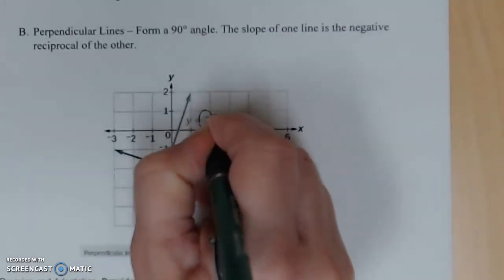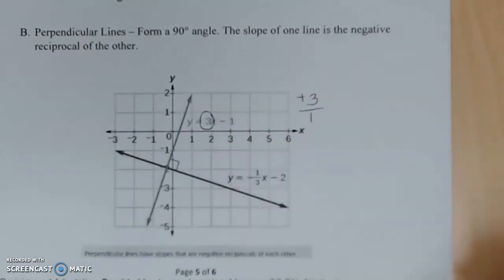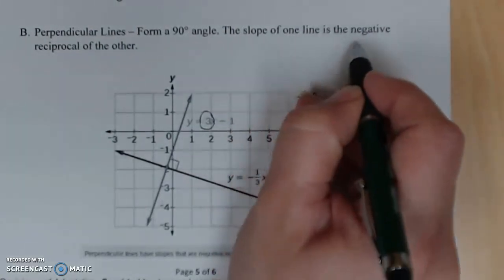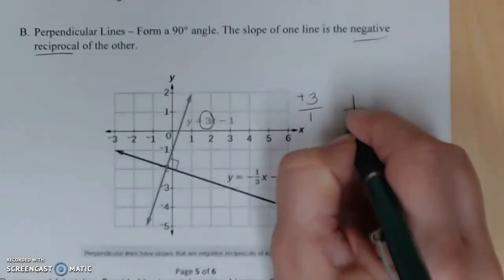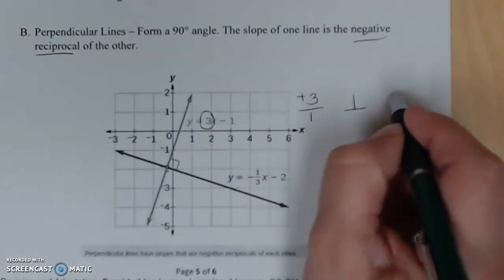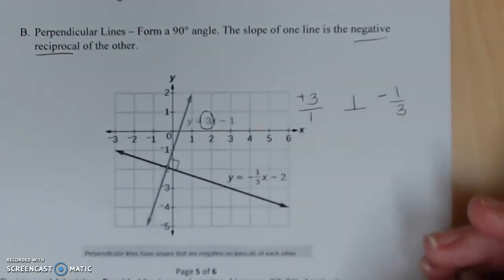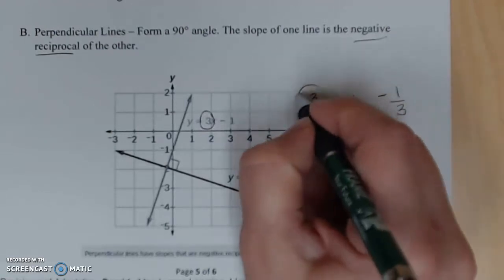If you'll notice, this slope is a 3—it's a positive 3. If I put this over 1 to find my negative reciprocal (this is the sign for perpendicular), you want to flip it and change the sign. So if I flip it, that gives me 1/3, and change the sign to negative.